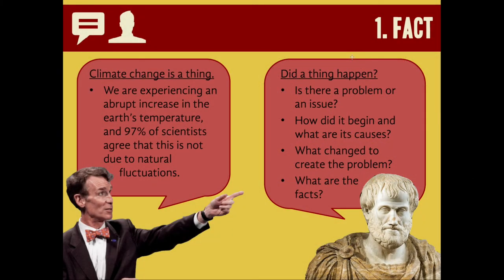To begin with fact: issues of fact are about whether or not a thing is a thing, if it's happening, and what's maybe brought it about. So an issue of fact asks, did a thing happen? If we're operating at the first level of stasis theory, the stasis of fact, we're asking basically: is there a problem or an issue? How did it start? What's causing it? What changed to make the problem? And what are the facts here?